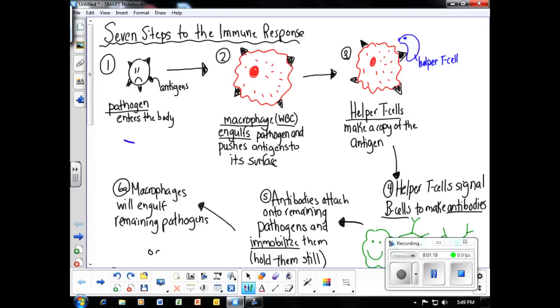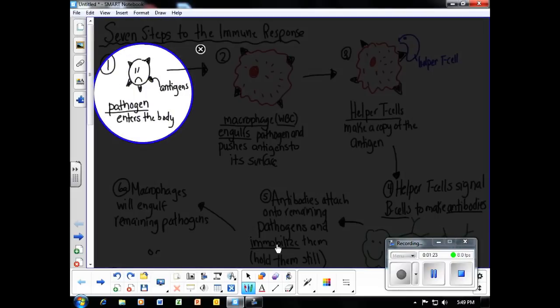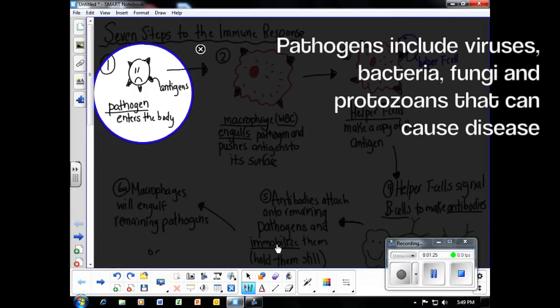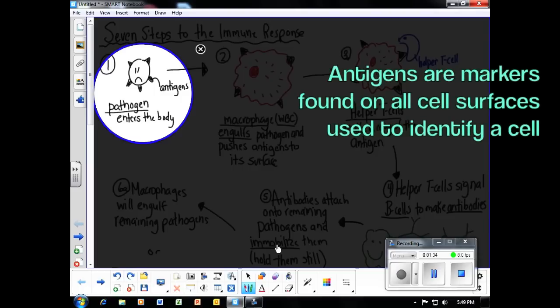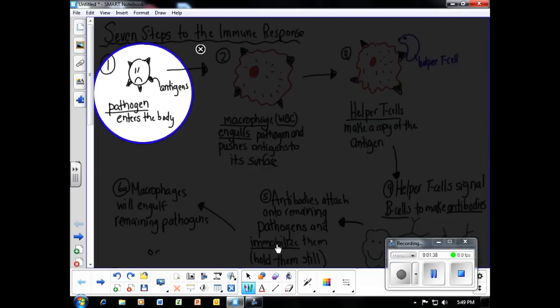The first step to the immune response is that the pathogen has to enter the body. The pathogen is anything that can harm the body, including a bacteria or a virus. All pathogens, along with all body cells, are identified by what are known as antigens. Antigens are on the marker of all types of cells and are used as identification.